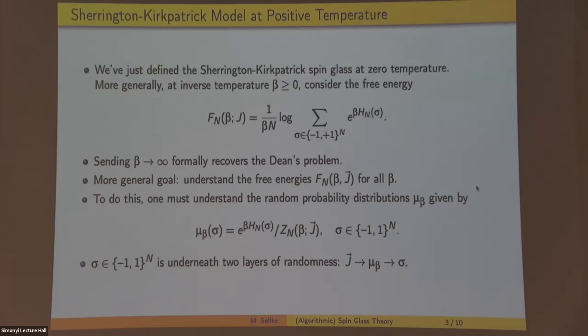So the way that one understands the solution to the Dean's problem is to understand these free energies at general beta. And to do this, it turns out that you need to understand the random probability distributions coming from this Hamiltonian h. So the probability in this measure mu_beta of a configuration sigma is proportional to e to the beta h_n sigma. So that's the Sherrington-Kirkpatrick model, and we'd like to understand it at a general beta, and in particular for large beta, which is low temperature. Let me point out that there's two levels of randomness here. We get random coefficients j that gives us a random distribution on the cube, and then we'd maybe like to understand the properties of this distribution. So that's something that makes this challenging.